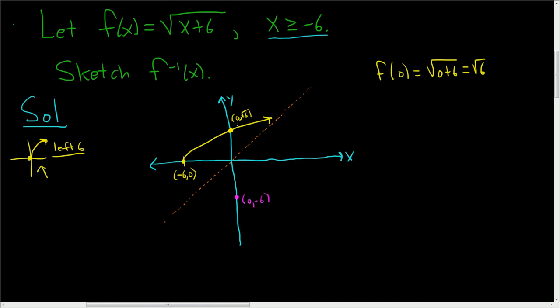And instead of 0, square root of 6, we're going to have square root of 6, comma 0. And so our inverse function should look something like this.